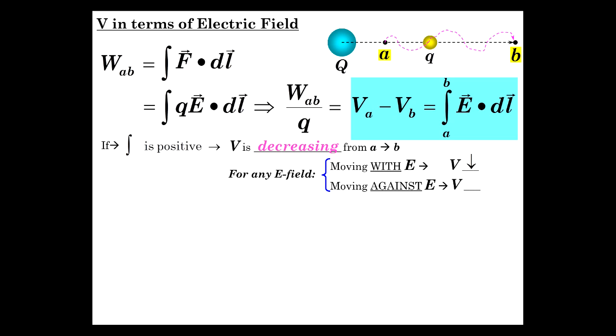And if we're moving against E, going the other way, potential is going up. So that's always true. That has nothing to do with this little Q now, right? So it only has to do with this guy. Of course, that statement, though, is going to be reversed if Q has the opposite sign.